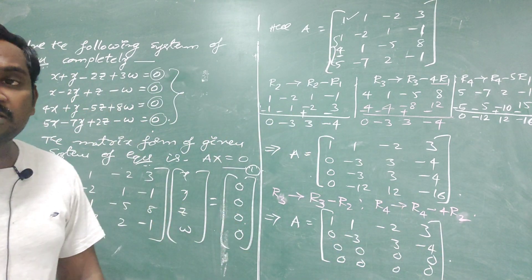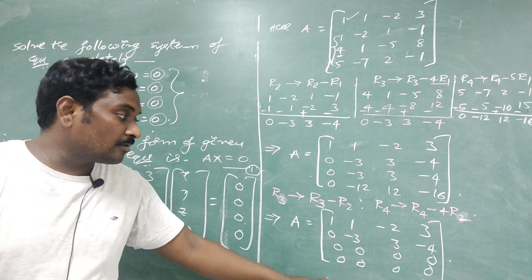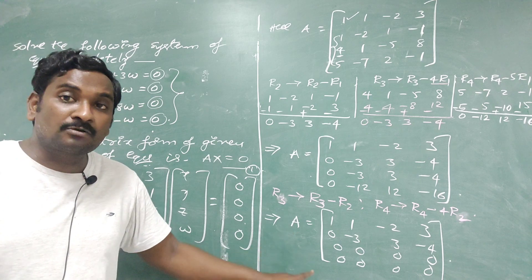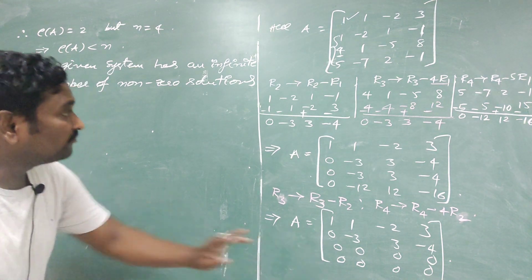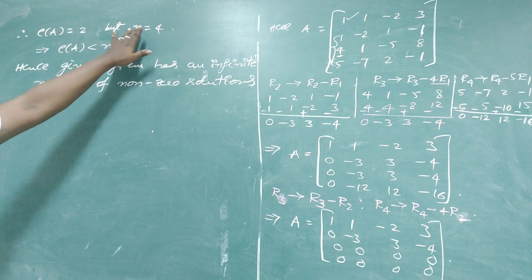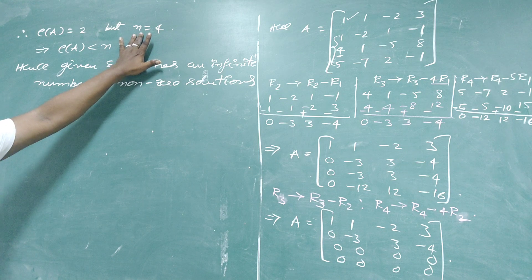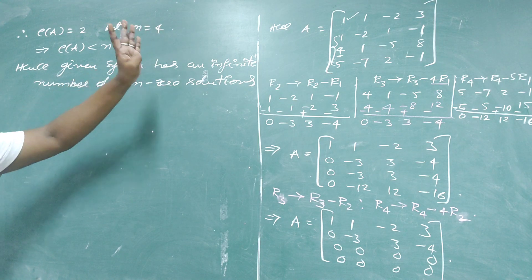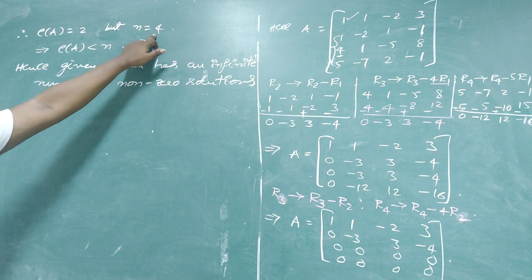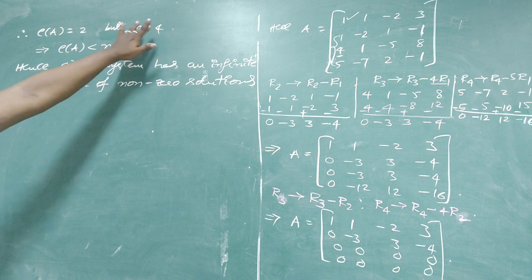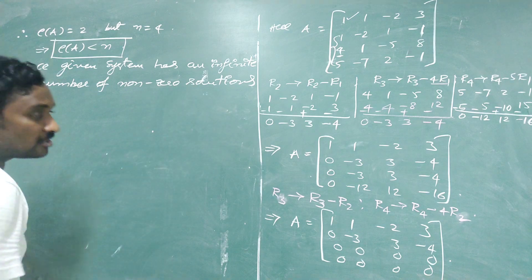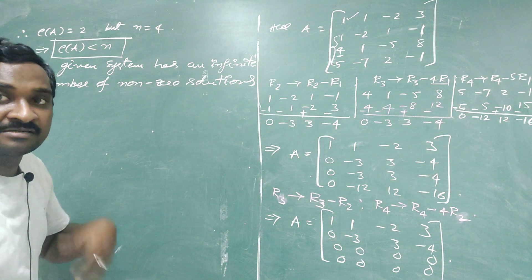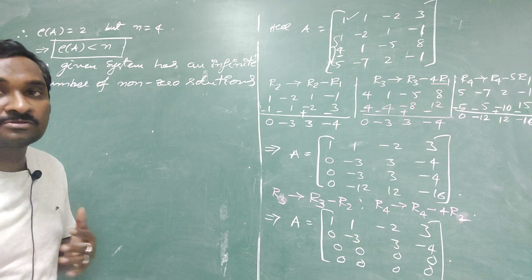We observe that A is now in echelon form and the last two rows are all zeros. The number of non-zero rows gives the rank: rank of A = 2. From the given system, the number of variables N = 4 (X, Y, Z, W). Since rank of A < N, the given system has an infinite number of non-zero (non-trivial) solutions.